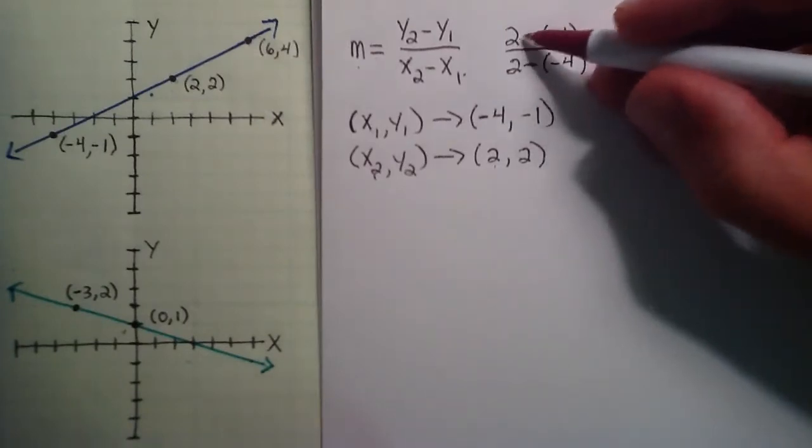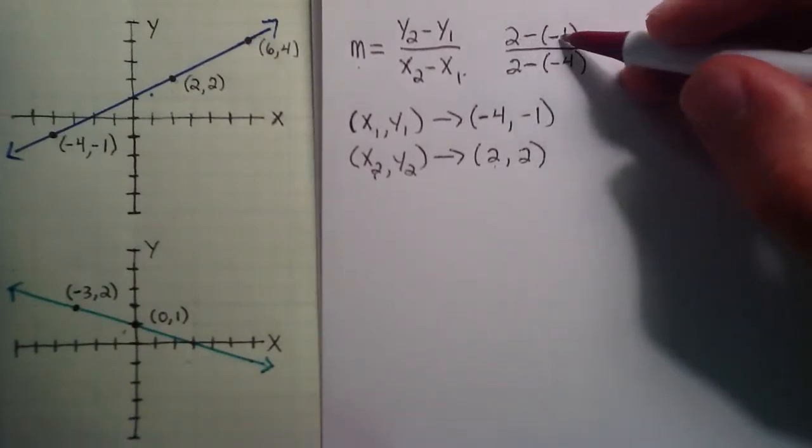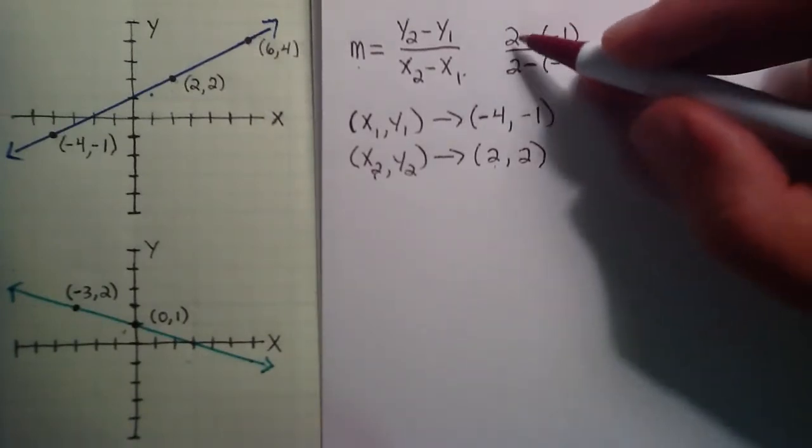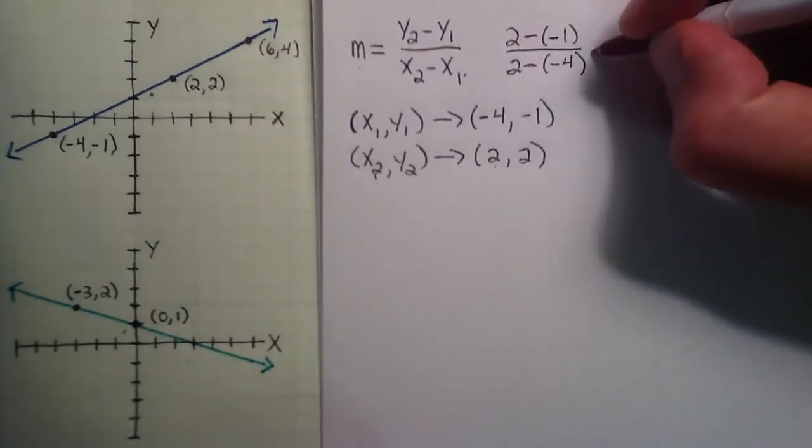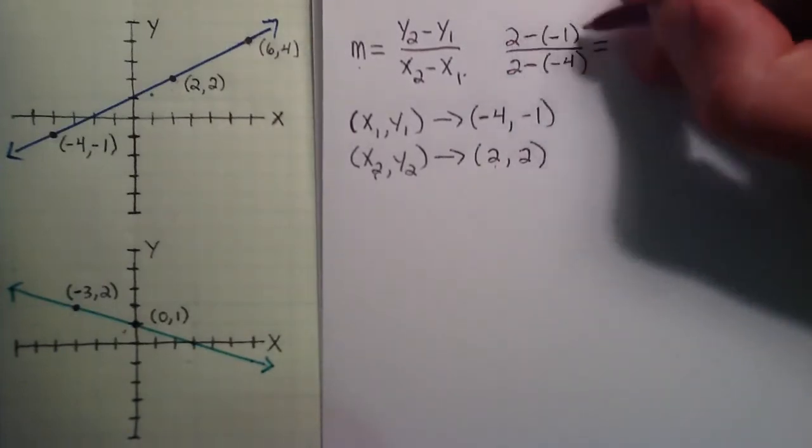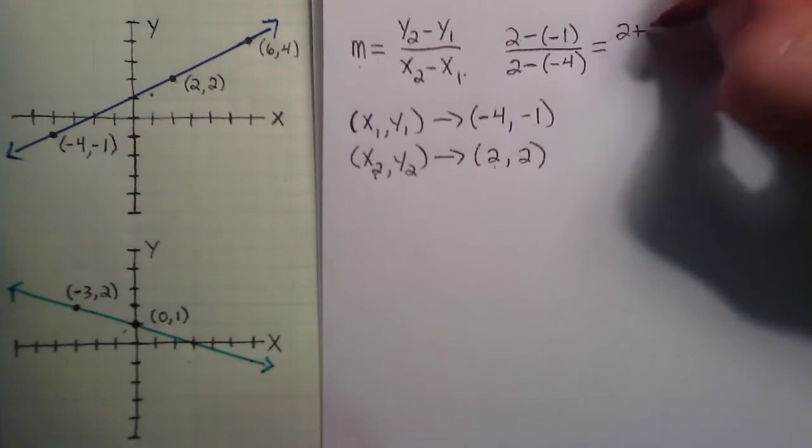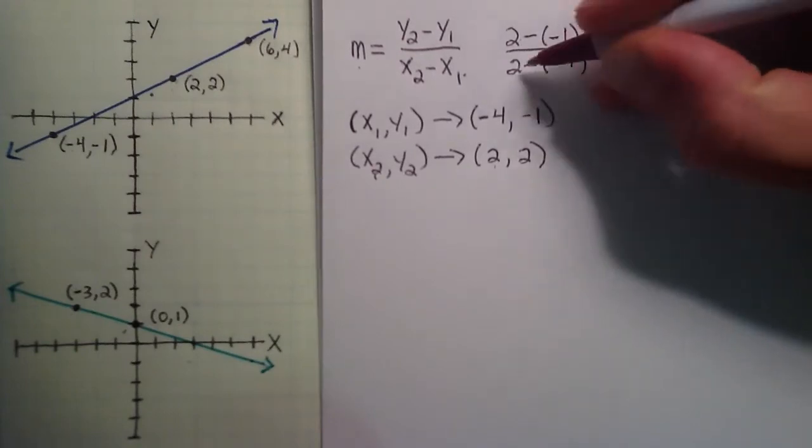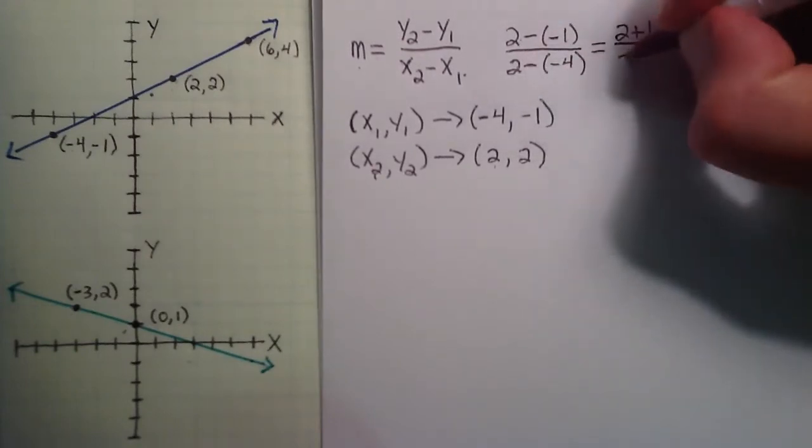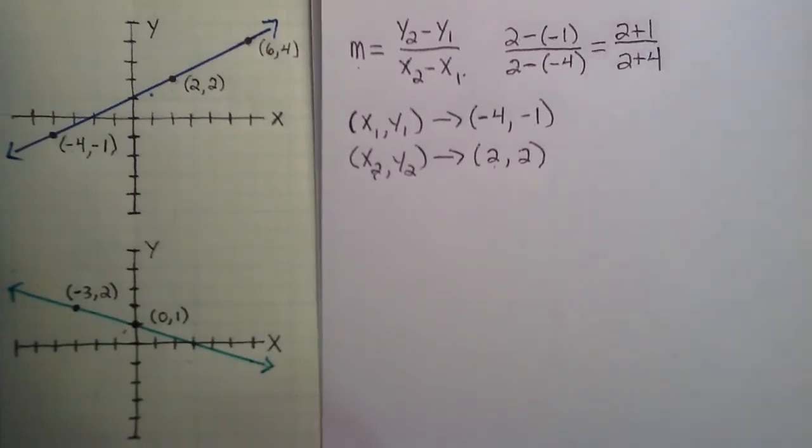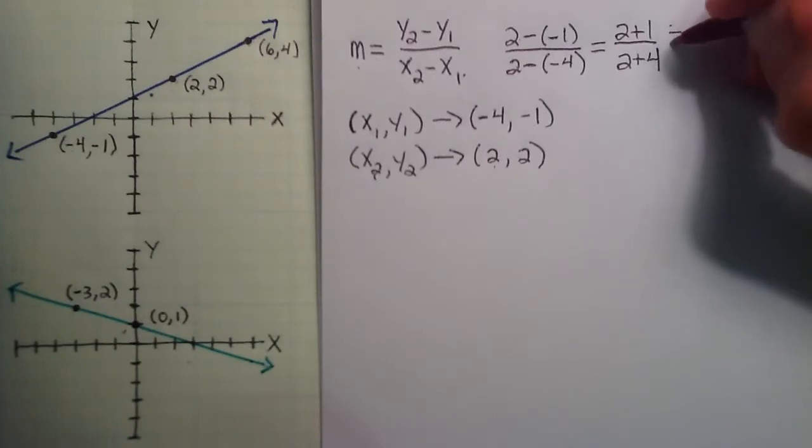So a positive number subtract a negative number is really the same thing as adding two positive numbers together. So we can rewrite this as 2 plus 1. And the denominator we can write as 2 plus 4. So 2 plus 1 gives us 3, and 2 plus 4 gives us 6.